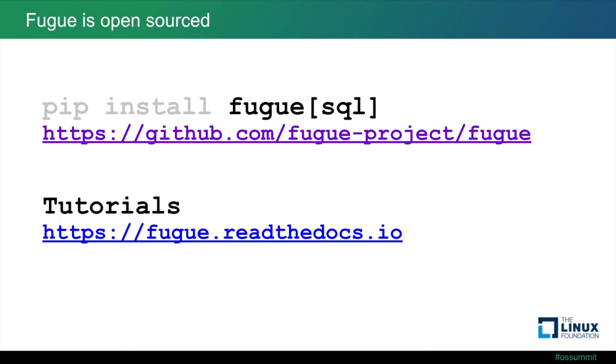Fugue is open-sourced. You can pip install it to start using it right away. We are looking for feedback and collaborations. Thanks everyone for attending our talk.